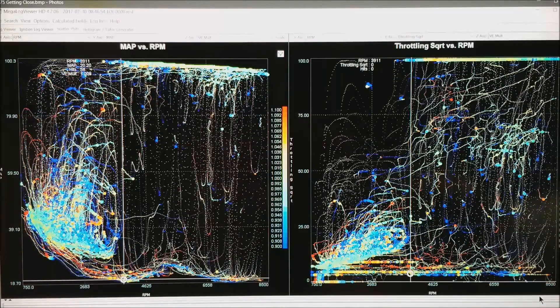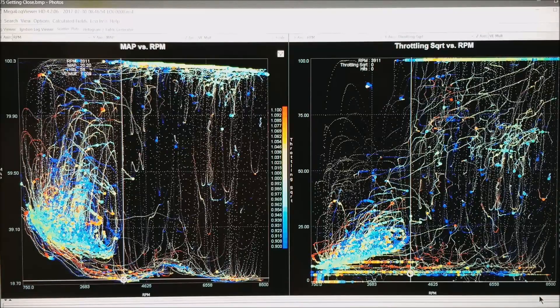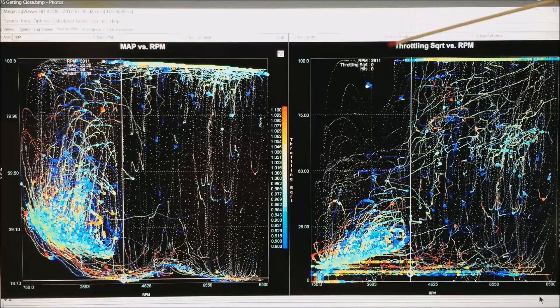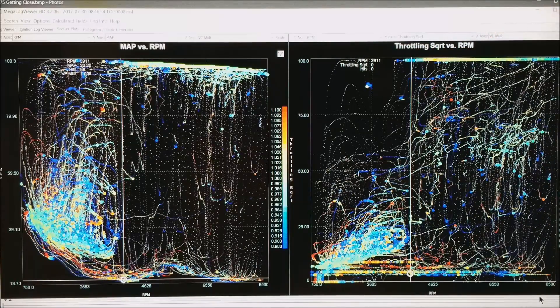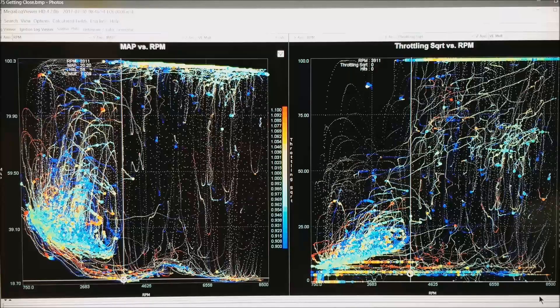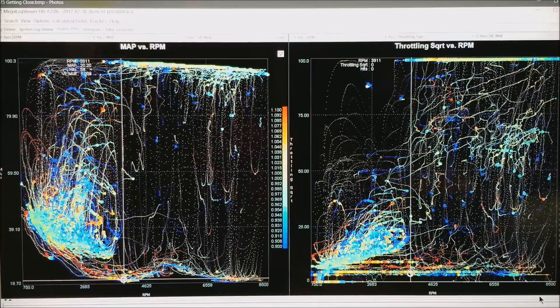Now what I have done is brought in the next week of the same motor. And now we are starting to get really close. On the right side is this formula throttling square root. And what I have done is just made it a little easier to see where you are. If this is a throttle based issue or a manifold air pressure issue.